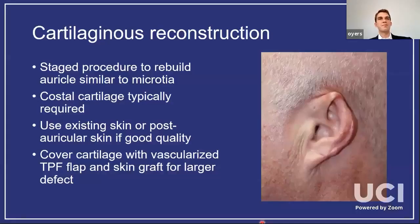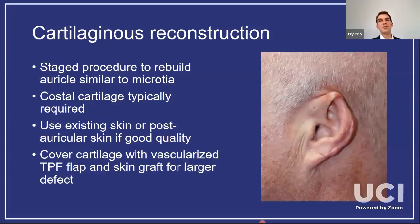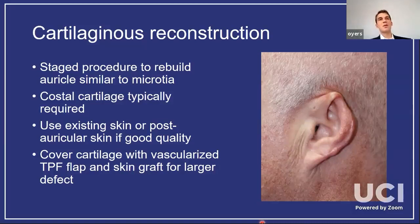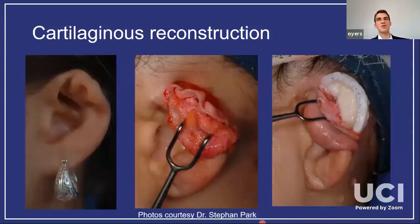For bigger defects where more cartilage and skin are missing, you plan for a multiple-stage procedure, similar to microtia reconstruction. You'll rely on costal cartilage because conchal cartilage will be insufficient. It depends on the character of your post-auricular skin — whether you have enough healthy post-auricular skin to resurface the external skin. Otherwise, a pedicle temporal parietal fascia flap provides vascularized supply, covered with a skin graft for final skin covering.